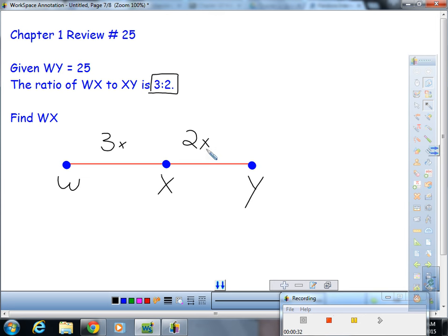So we can say that 3x + 2x equals 25, and now we've got ourselves an equation that we can solve.